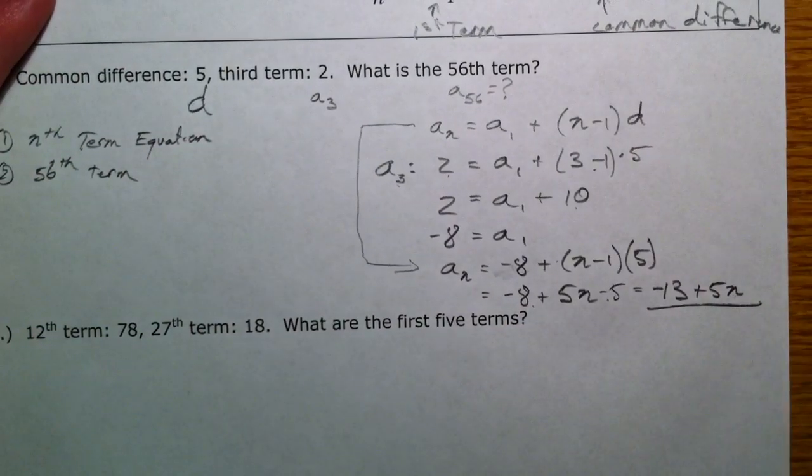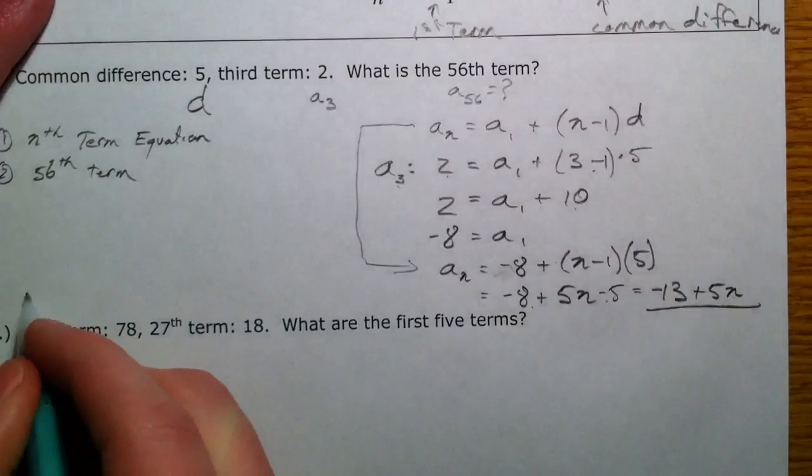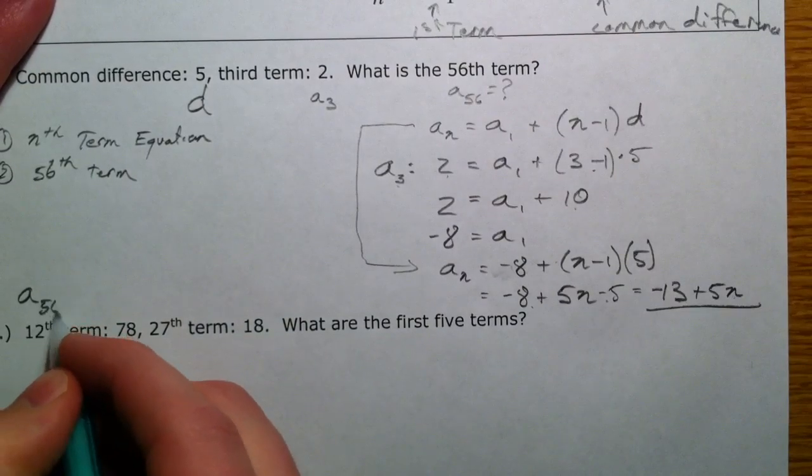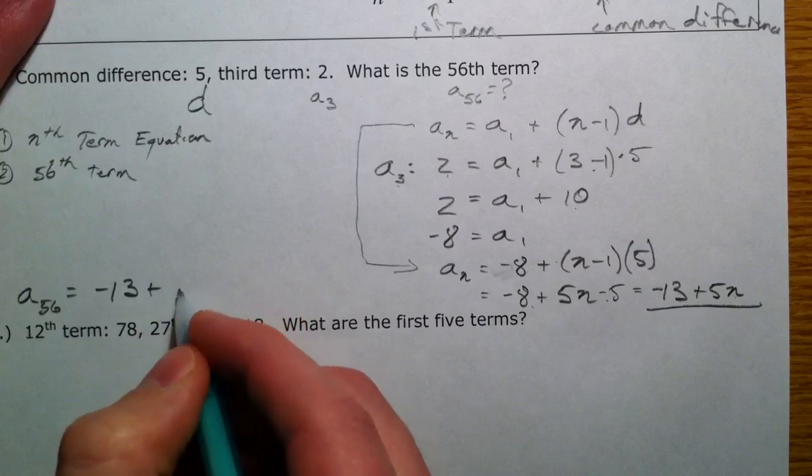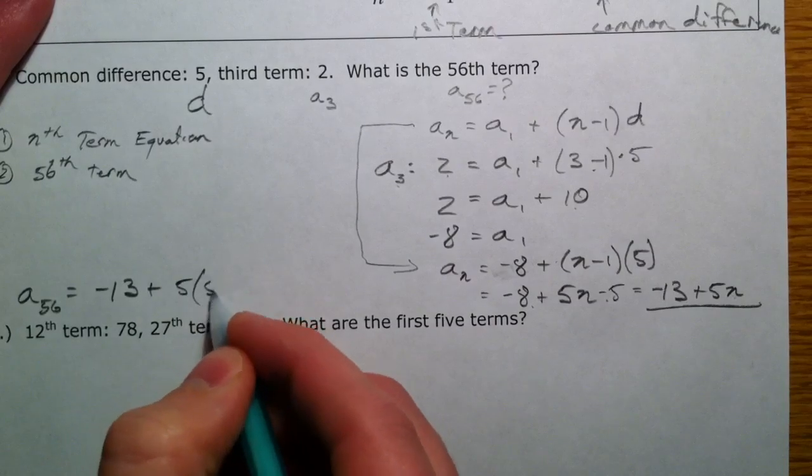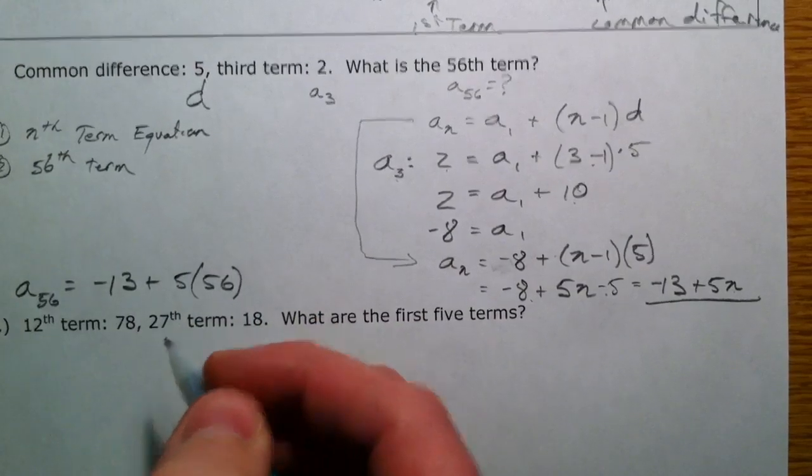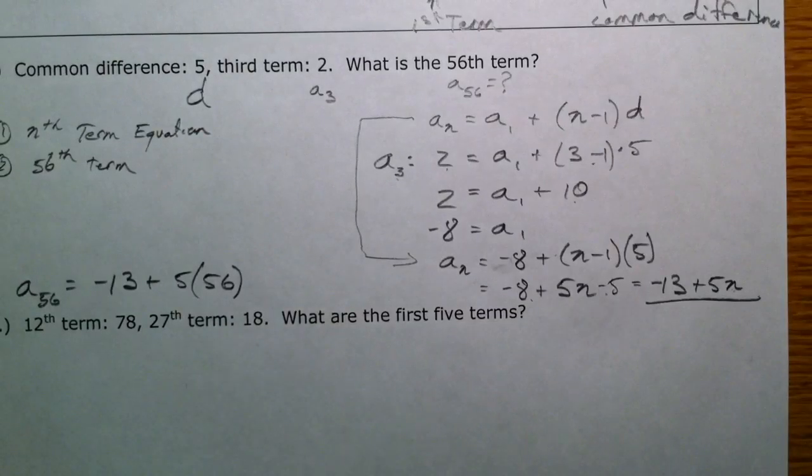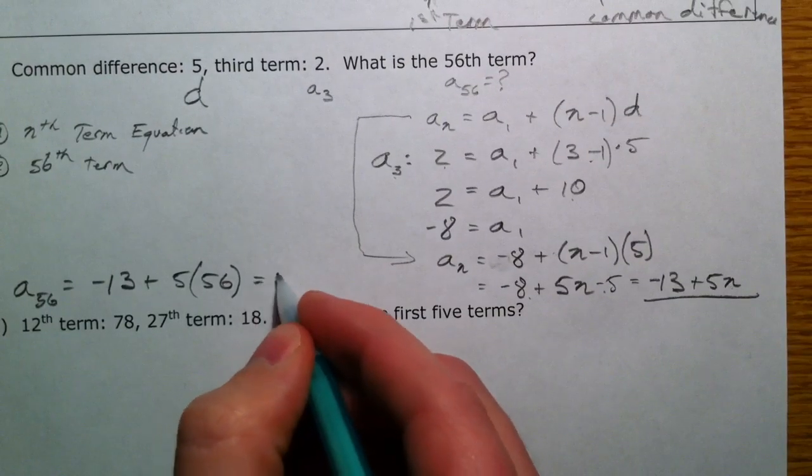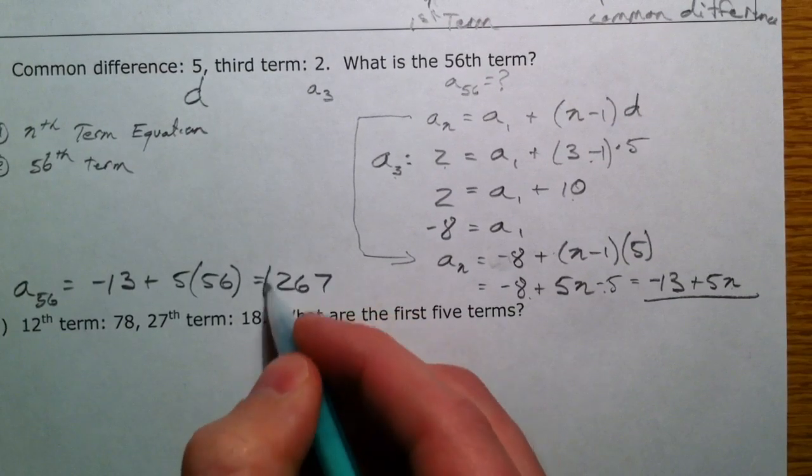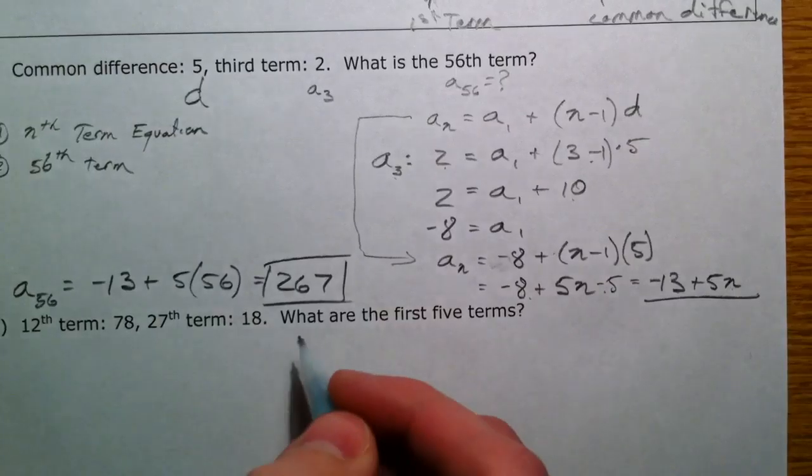Whatever n is, we can plug it in. So if we want to find the 56th term, a sub 56 equals negative 13 plus 5 times 56, which gives us 267 as our 56th term.